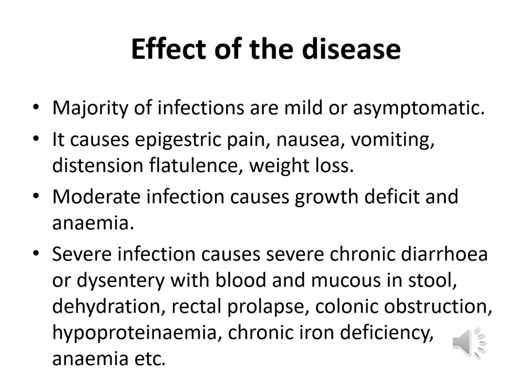Regarding the effects of whipworm disease, the majority of infections are mild or asymptomatic. It causes epigastric pain, nausea, vomiting, distension, flatulence, and weight loss. Moderate infections cause growth deficit and anemia. Severe infections cause severe chronic diarrhea or dysentery with blood and mucus in stools, dehydration, rectal prolapse, colonic obstruction, hypoproteinemia, and chronic iron deficiency anemia.